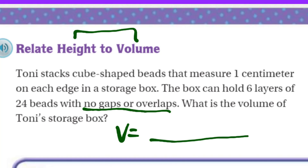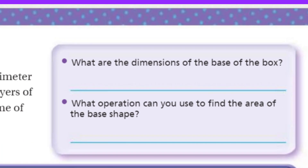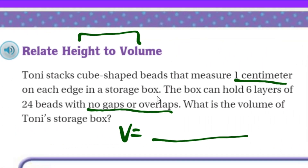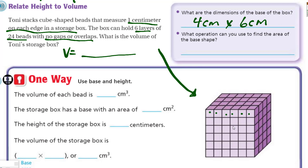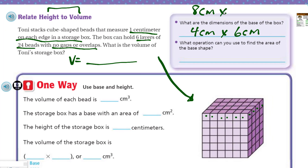We need to figure out what that volume equals. What are the dimensions of the base of the box? Thinking about this problem, the dimensions have to be four centimeters by six centimeters. We have one centimeter on each edge in the storage box, but the box holds six layers of 24 beads. So we know we have 24 beads. Here we have 1, 2, 3, 4, 5, 6 going one way, and 1, 2, 3, 4 going the other. I was also thinking it could be eight centimeters by three centimeters, because that would also give a layer of 24 beads.